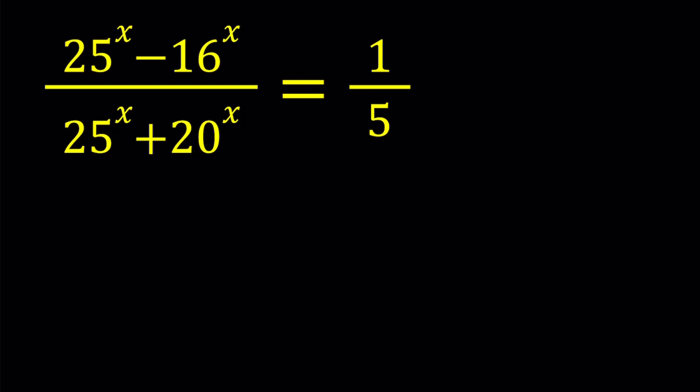First of all, note that the prime factorization of these numbers contain 2's and 5's. So we're going to use that as an excuse for our substitution. Let's set 2 to the power x equals a and 5 to the power x equals b.